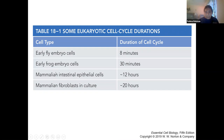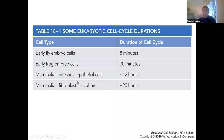For mammalian cells, it also matters where the cell is located. Your skin or epithelial cells regenerate at a much faster rate than your brain cells — neurons don't regenerate the same way. In culture, even in an isolated environment with lots of nutrients and growth factors, there is still a range of time cells take to replicate. Intestinal epithelial cells take about 12 hours, while fibroblasts can take upwards of 20 hours.